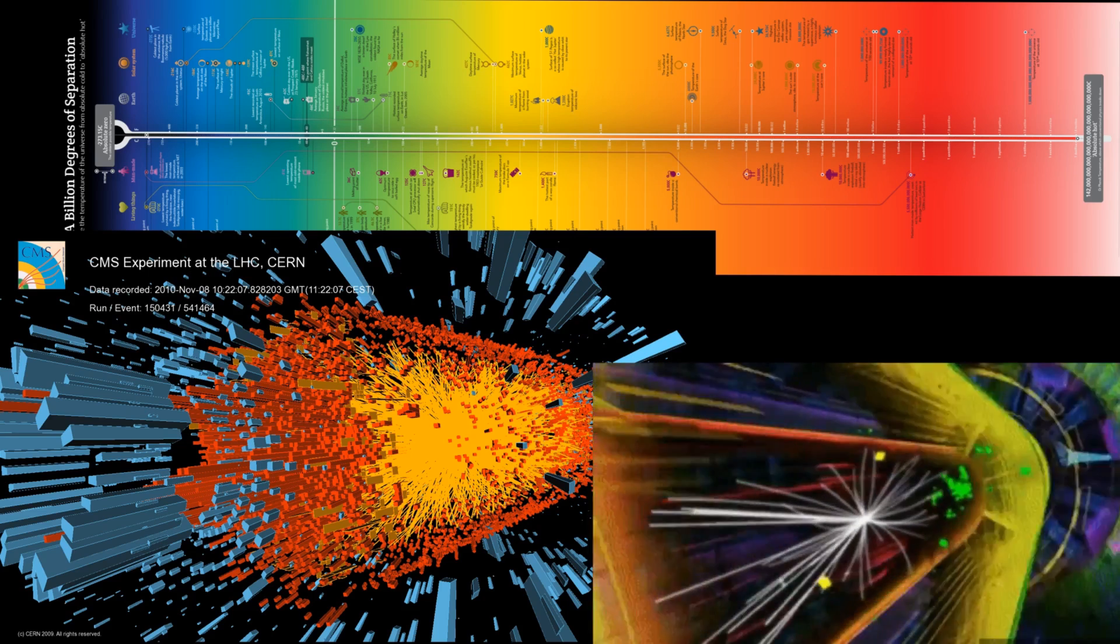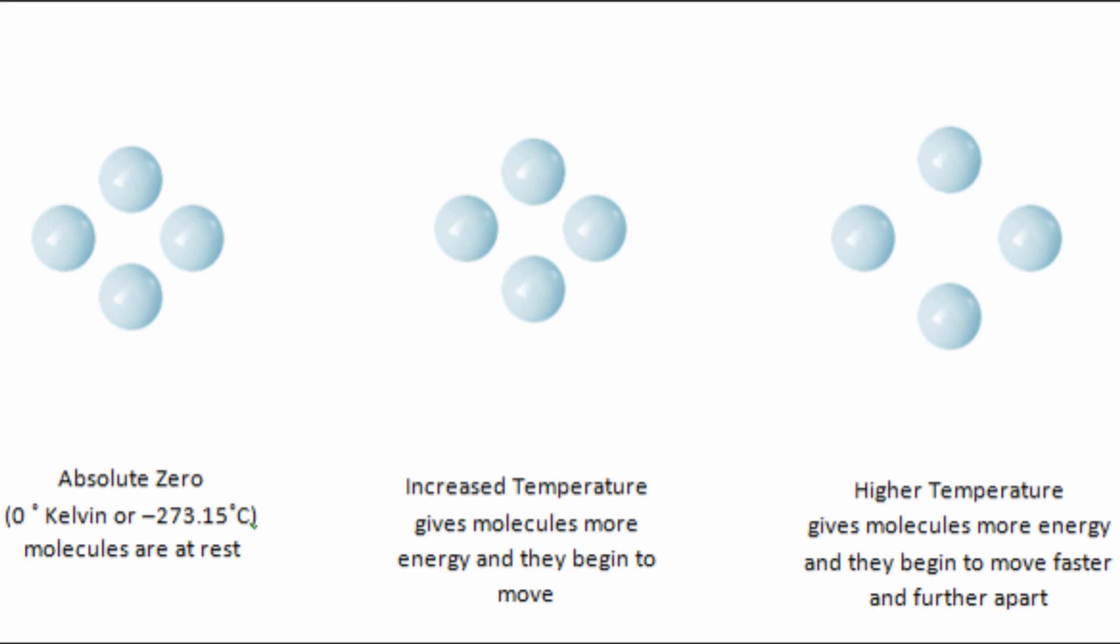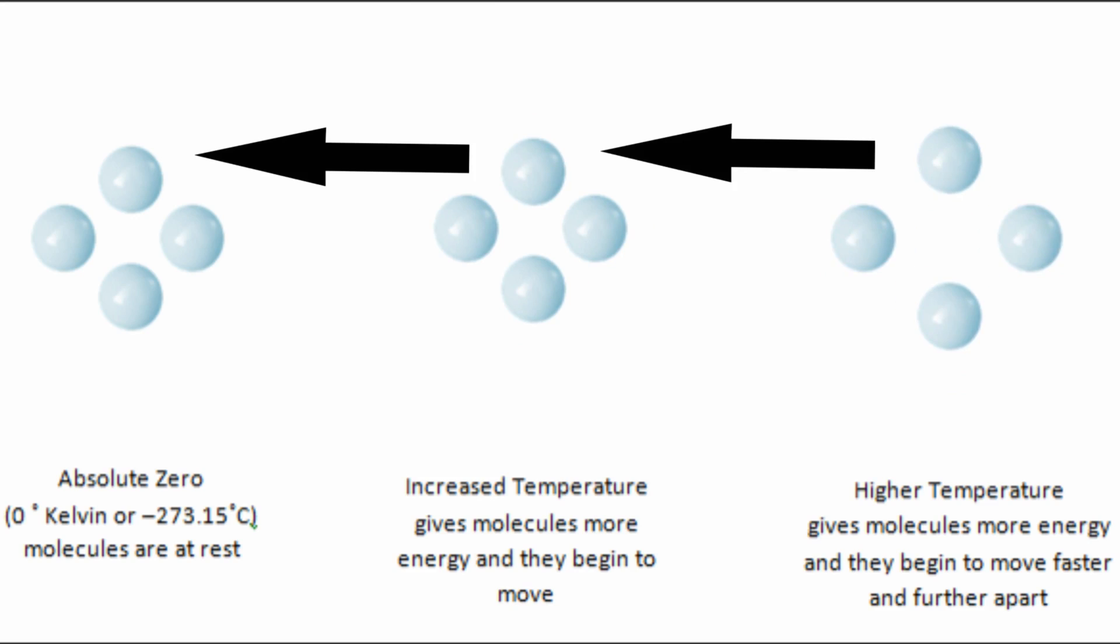But on the other hand, when we cool atoms, they start to slow down their vibration, till a point where the vibration stops completely. At this point, all kinetic energy has been taken from the atoms, and there is nothing more to be taken. This point was found to be at minus 273.15 Celsius, and we called it the absolute zero temperature.